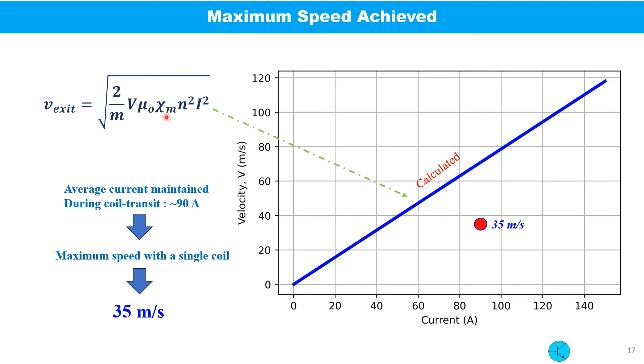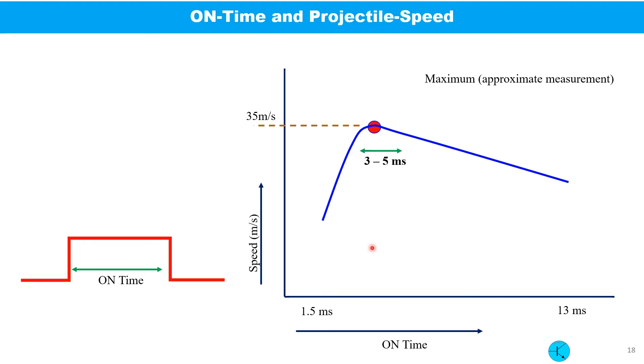This is the formula that can be used to calculate the speed of the projectile out of a coil gun. So this is the plot current versus speed. And during the on time, the average current in my case is around 90 amp. So the calculated speed should be more than 60 meter per second. But in my case, I found 35 meter per second. The on time of the coil varied from 1.5 millisecond to 13 millisecond. And I found maximum achievable speed around 35 meter per second within the range of 3 to 5 millisecond.